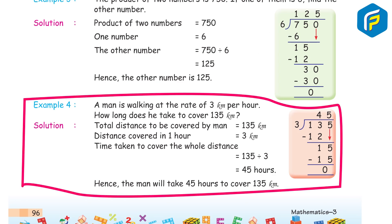Example 4: A man is walking at the rate of 3 km per hour. How long does he take to cover 135 km? Solution: total distance = 135 km, distance covered in 1 hour = 3 km. Time taken = 135 ÷ 3 = 45 hours. Hence, the man will take 45 hours to cover 135 km.